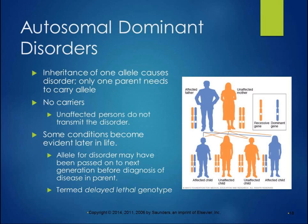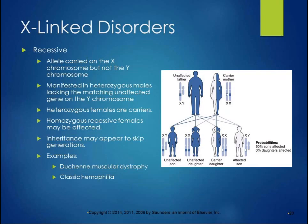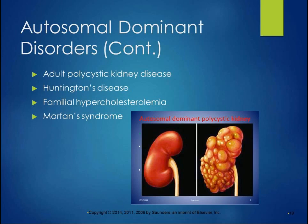With an autosomal dominant and one parent affected, one unaffected, the sex of children is equally affected, and children have a 50-50 chance of being affected or unaffected. These are the delayed lethal genotypes that don't show up until adulthood. With Huntington's — which we'll cover more in neuro class — patients have involuntary movements; in fact, someone with Huntington's once accidentally kicked the speaker in the head while working with them.